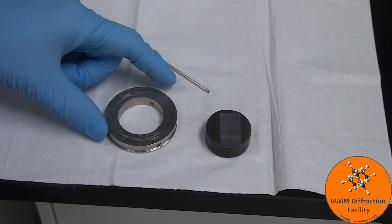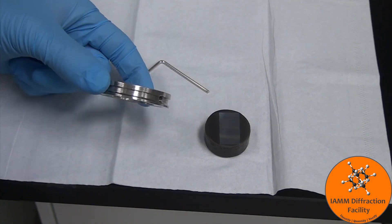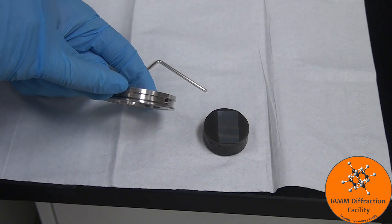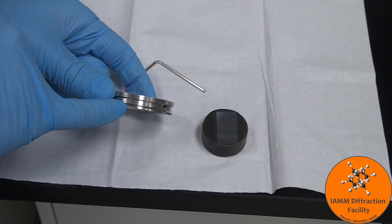The first thing to point out is that it is very important to know the orientation of the sample holder. You'll notice that there is a thicker section up top and a thinner section on the bottom.